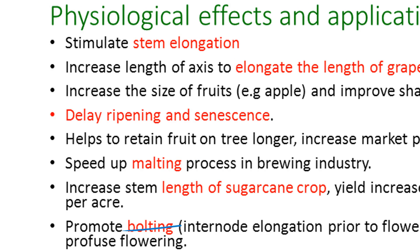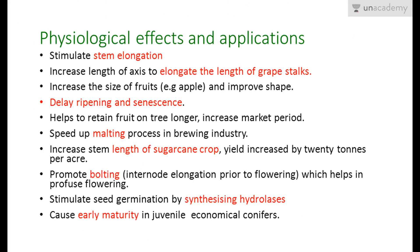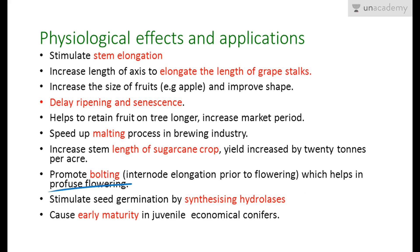Gibberellins also promote bolting, which means internode elongation prior to flowering, and this helps in profuse flowering. When internodes are too small, excess leaves come out and flower production is reduced. So before flowering, the internodes should be lengthened. Gibberellins promote this internode elongation — a physiological effect known as bolting — which leads to more profuse flowering.